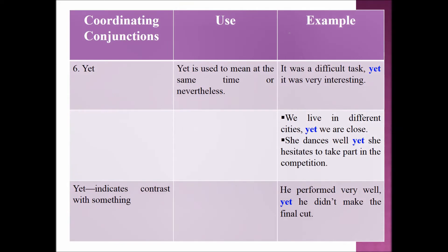Next, let's see about YET. YET is used to mean 'at the same time' or 'nevertheless'. Example sentences: 'It was a difficult task, yet it was very interesting.' 'We live in different cities, yet we are close.' 'She dances well, yet she hesitates to take part in the competition.' YET indicates contrast — example: 'He performed very well, yet he didn't make the final cut.'